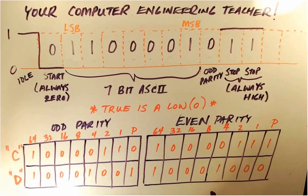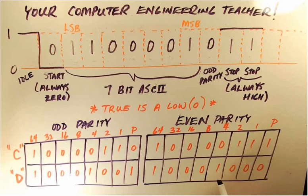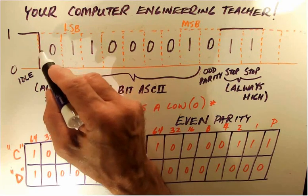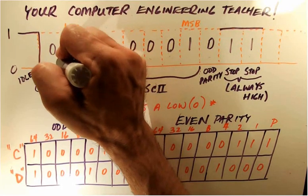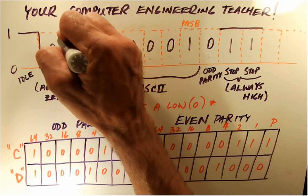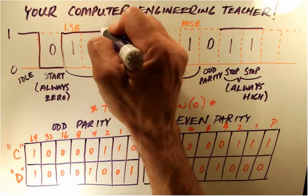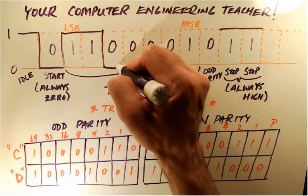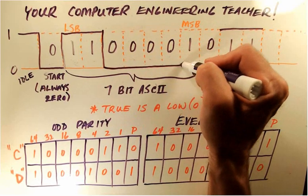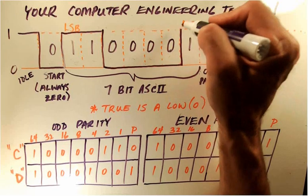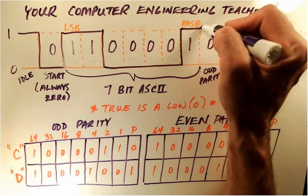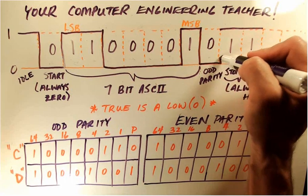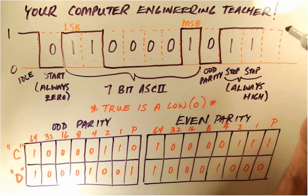So if you could actually see the voltages and measure the voltages on the wire, it starts with a start bit which is a low. Then it goes high for two bits. So it goes up and it stays high for two bits. Then it's a low for the next four bits. Then it goes back high for one bit. Next is the parity bit. It is a zero so it's low and then it goes back up like this.